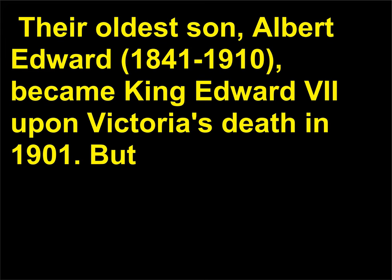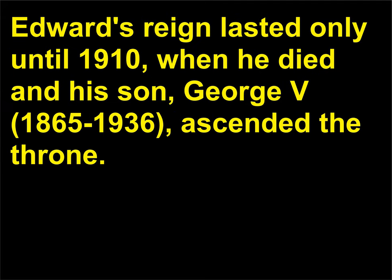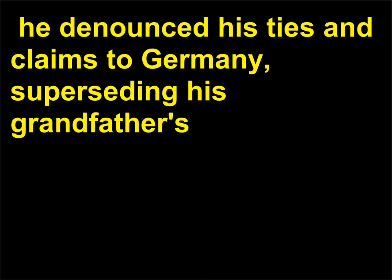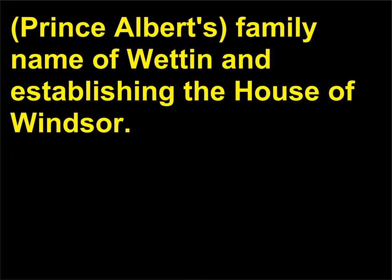Edward's reign lasted only until 1910, when he died and his son, George V, 1865–1936, ascended the throne. George was King during World War I, 1914–18, and in 1917, with Britain and Germany bitter enemies, he denounced his ties and claims to Germany, superseding his grandfather Prince Albert's family name of Wettin and establishing the House of Windsor.